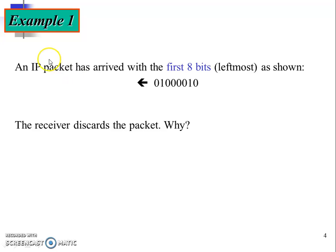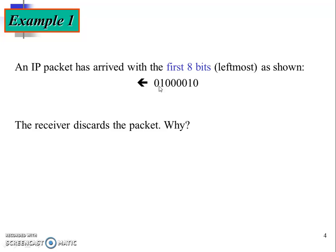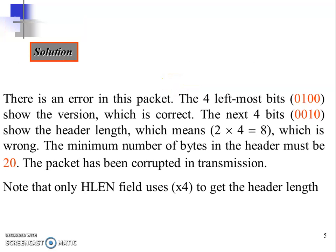Example one: an IP packet has arrived with the first 8 bits (leftmost) as shown below — 0 1 0 0 0 0 0 1 0. The receiver discards the packet. Why? Whenever you get a binary sequence like this, you should be well versed with the format of IP datagram. The first 4 bits are dedicated for the version field. For IPv4, those 4 bits should represent the number 4, that is 0 1 0 0. In this case it does represent number 4.